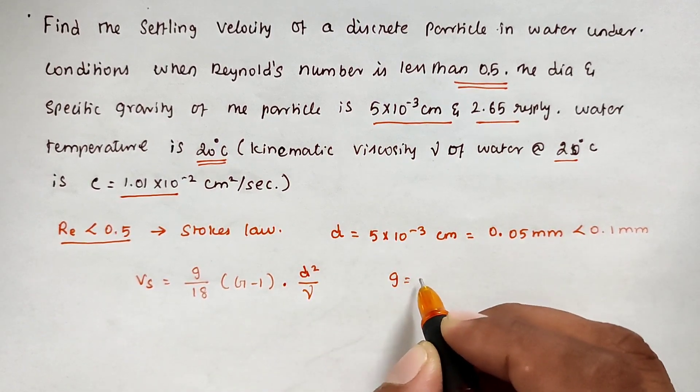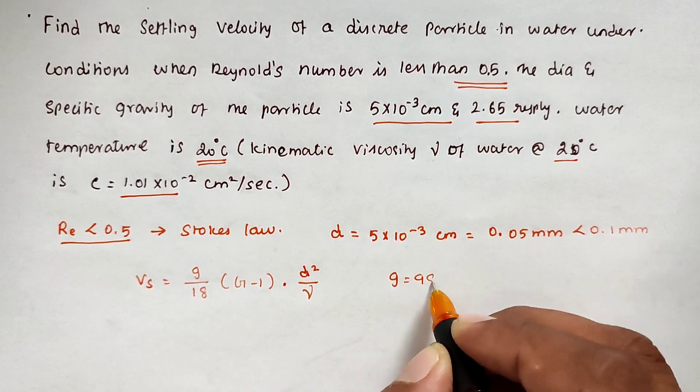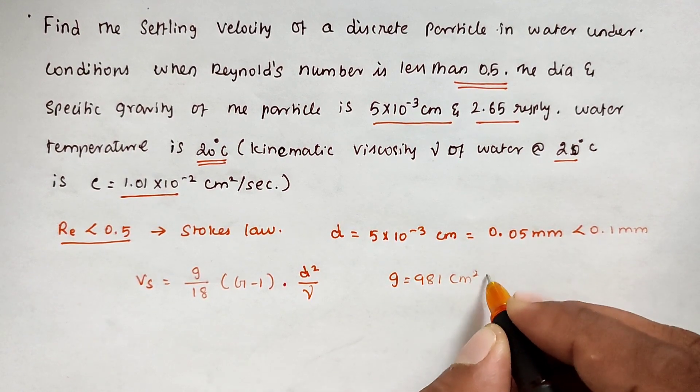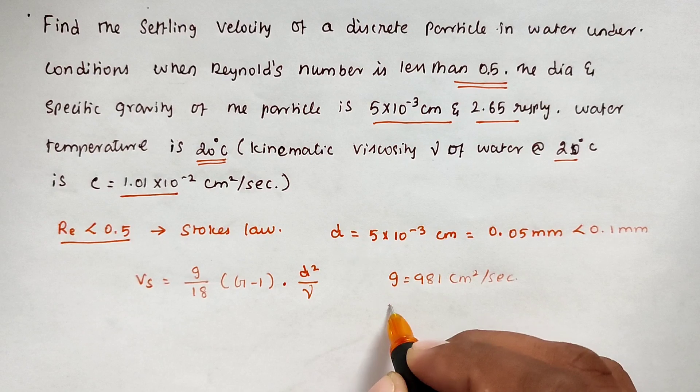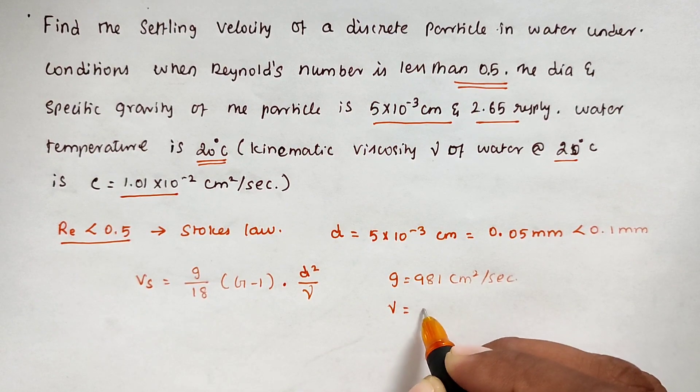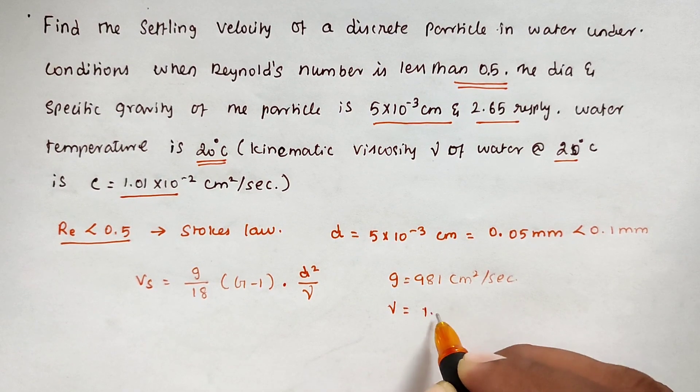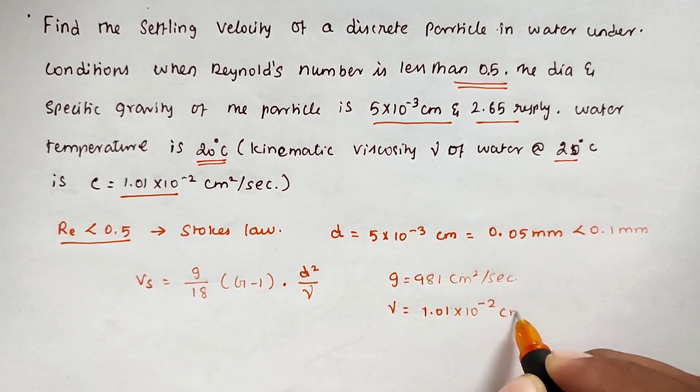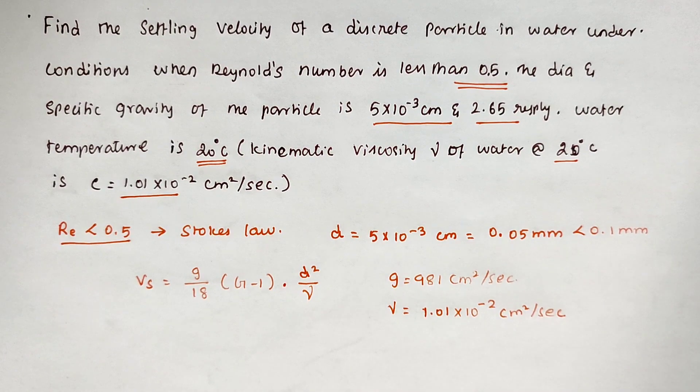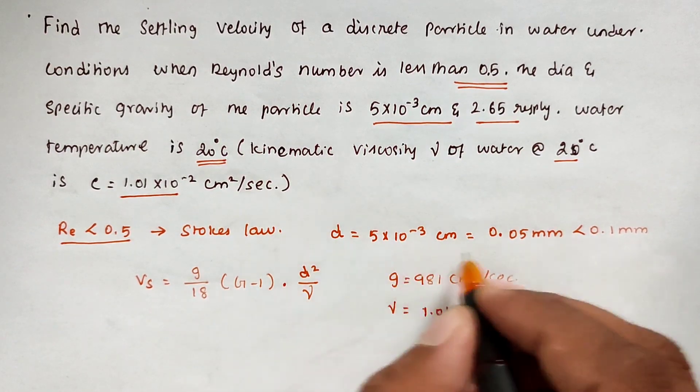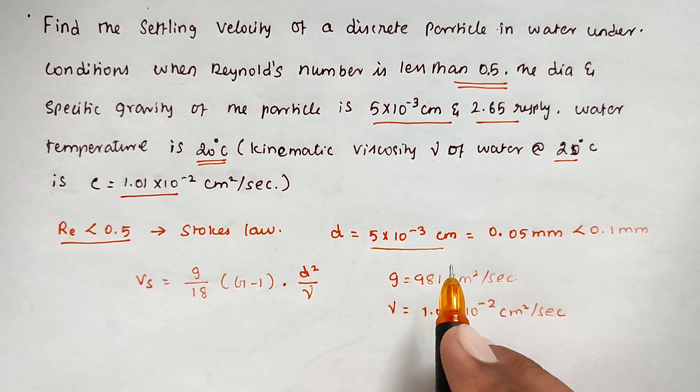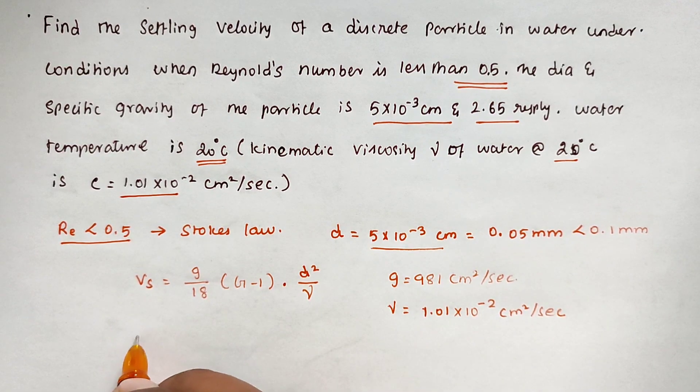The diameter d is given as 5×10^-3 cm. Now we can directly substitute all the values into the formula: V = (981/18) × (G-1) × (d²/ν).